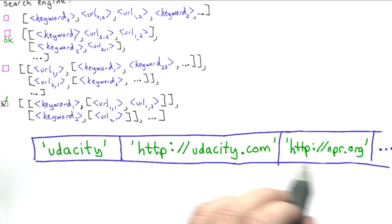And we'd have to search through every element to try to decide whether the next thing is a URL or the next keyword. So this is not going to work very well. So option 1 is definitely a bad idea.